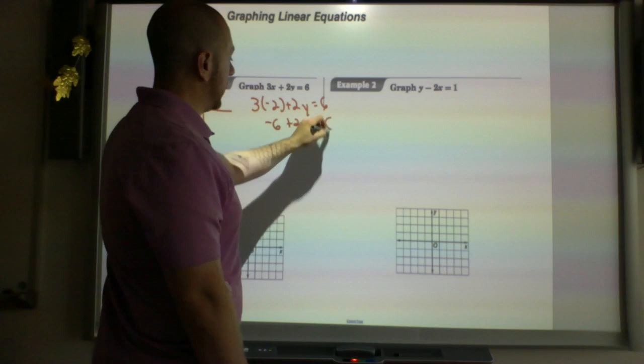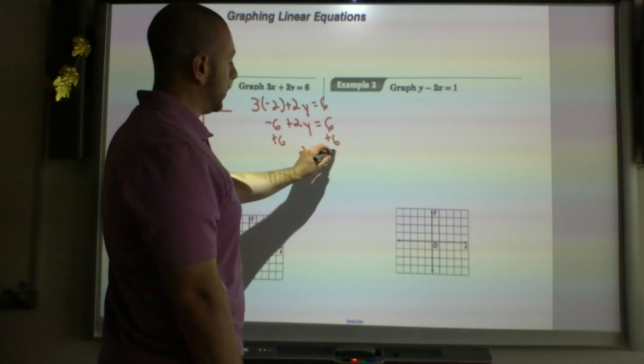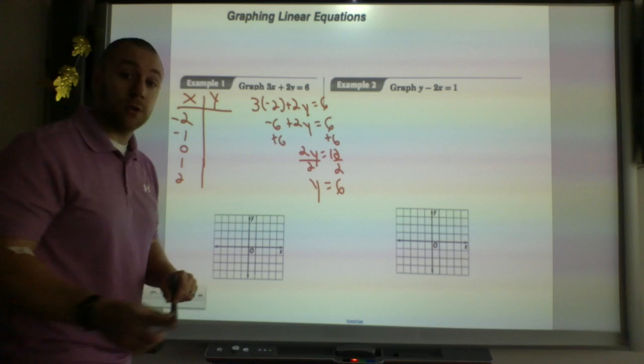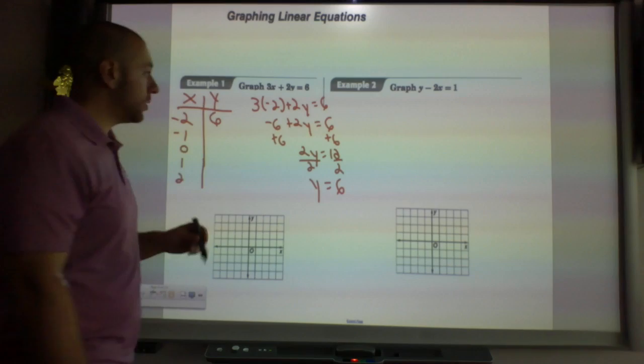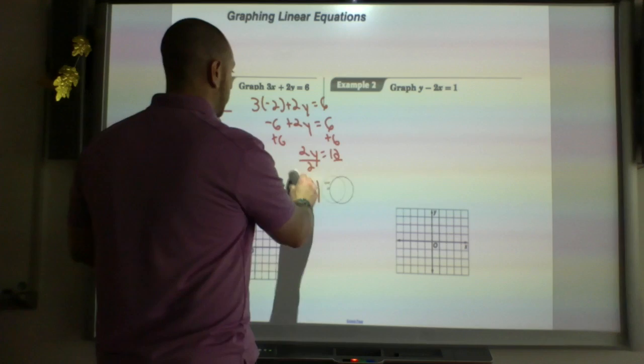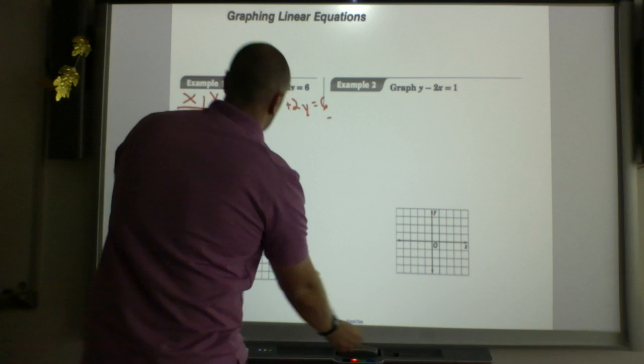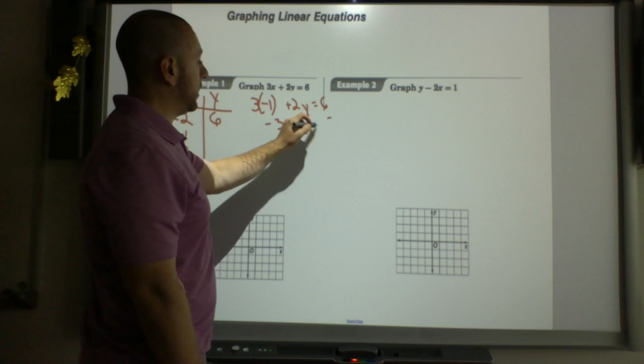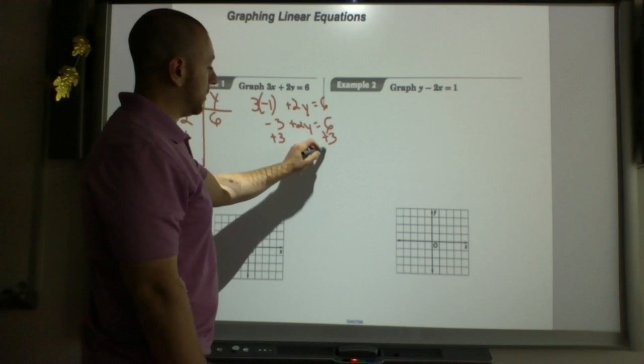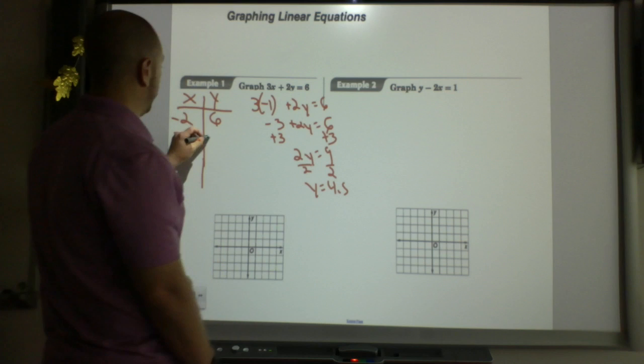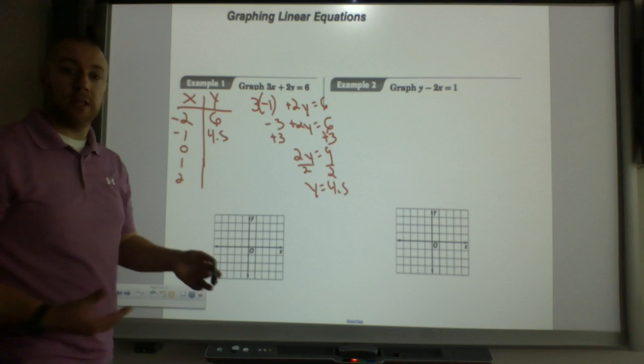I would add 6 on both sides, 2y equals 12. I divide by 2, y is 6. Now I repeat the process, only now we have negative 1. That's negative 3 plus 2y equals 6. I add 3 on both sides, 2y equals 9, divided by 2, y is 4.5. I can continue this down and keep plugging in these numbers.